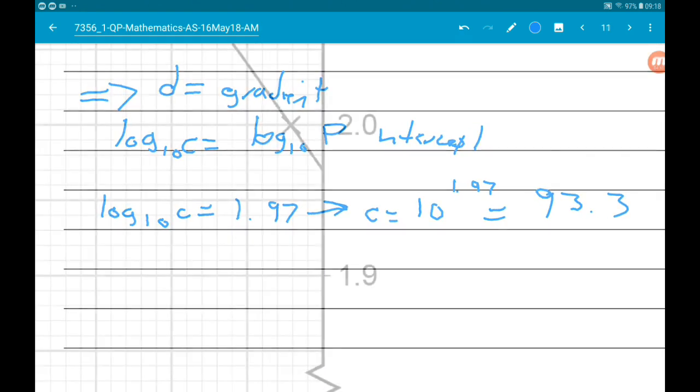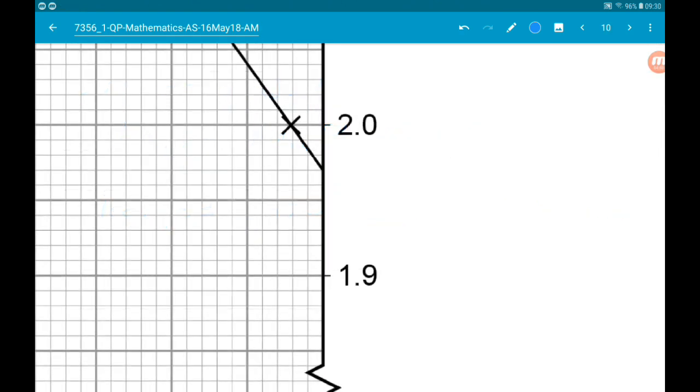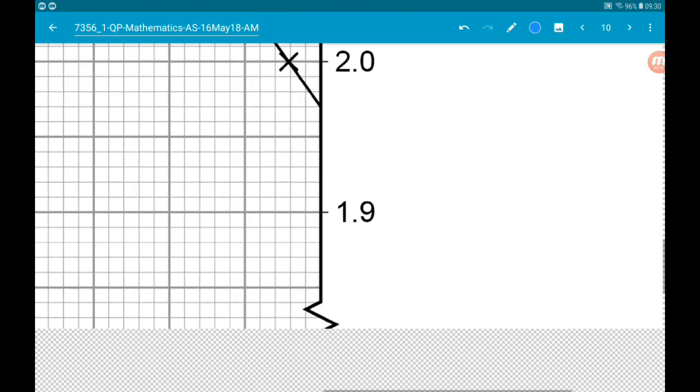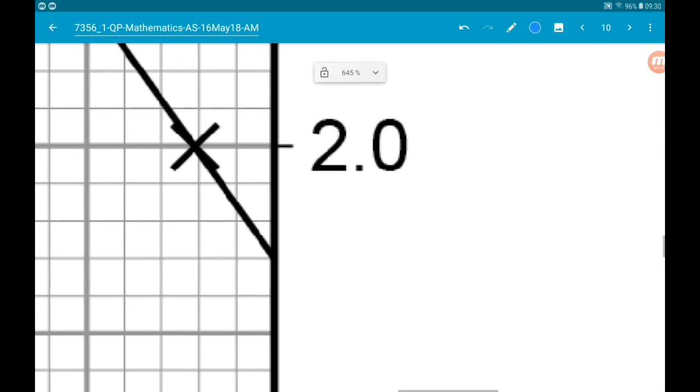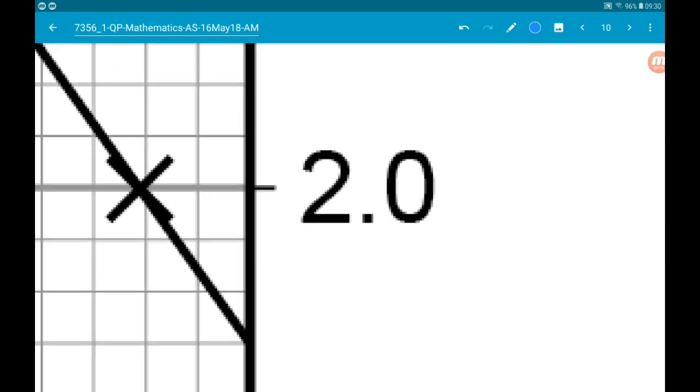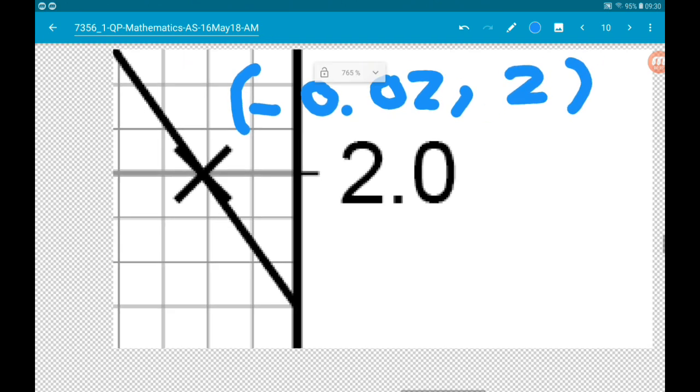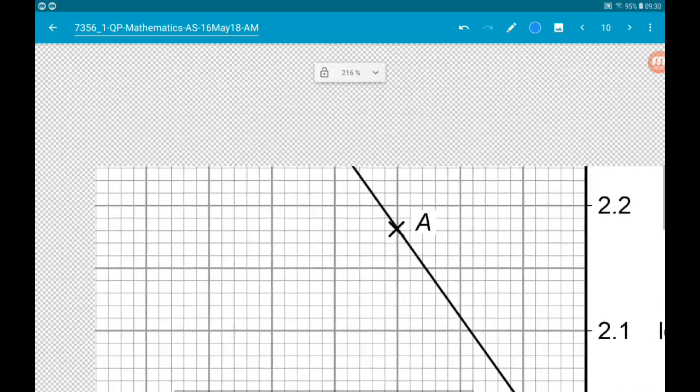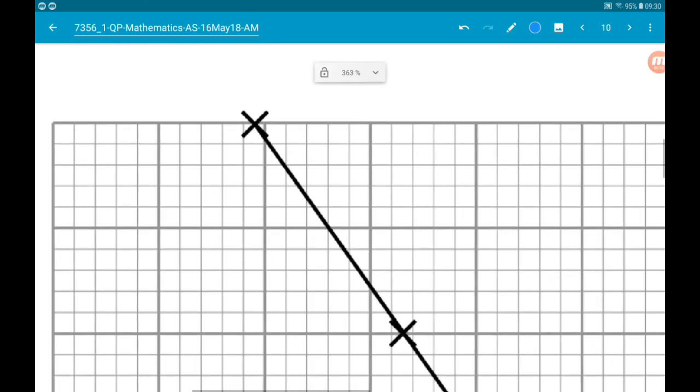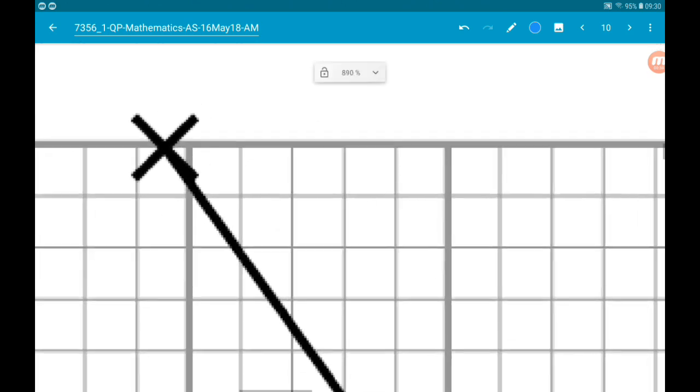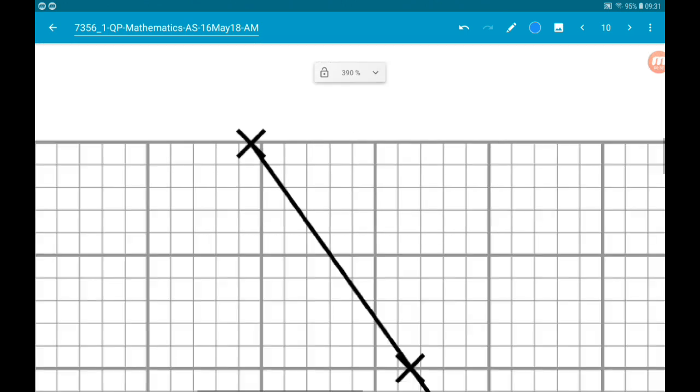So that's c. Now we need to find d. Okay, so when we're finding gradients of these graphs, always use the two points farthest away from each other. So we're going to use this first point here which has an x-coordinate of minus 0.02 and a y-coordinate of 2.